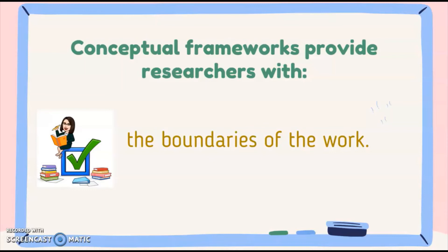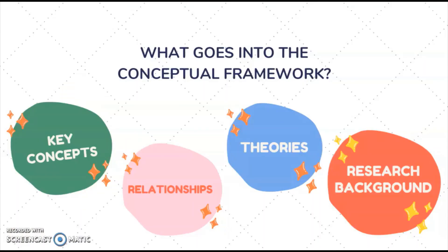And lastly, the boundaries of the work are also presented in the conceptual framework, because since the framework presents only the variables of the research as well as the theories involved, it also implicitly speaks about the limitations. Now, what actually goes into the conceptual framework? Number one, we have the key concepts or the variables; relationships; the theories; and the research background. Some researchers also note that specific aspects of the research — such as the respondents, research locale, or implicit hypothesis — are in the framework, which is why you are allowed to give readers a glimpse of your research background through your conceptual framework.